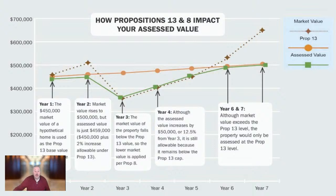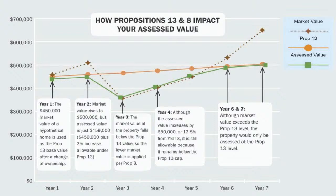Let's go through this slide. The top line — the magenta line with the diamonds — is the market value. In this example, year number one, you bought the house for $450,000. That's the year you bought it, which means not only is it your market value, it's also the Prop 13 maximum value, and it is your actual assessed value — what your property taxes are charged on.